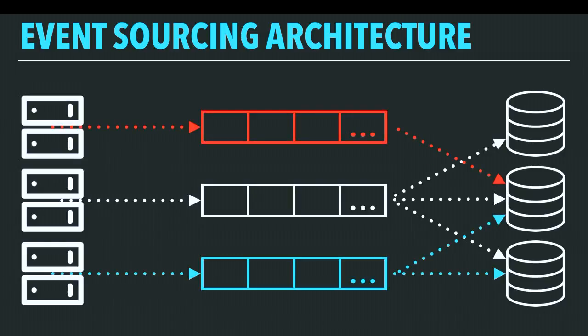Similarly, we can have multiple systems at the front of the queue, sending multiple distinct types of events on different topics or streams, and set up each consuming system to only consume the event streams that they're interested in.